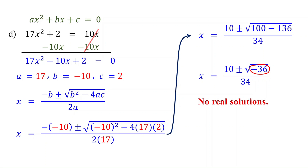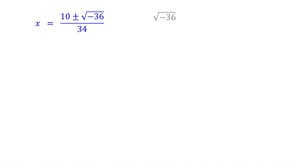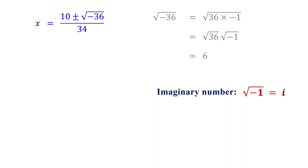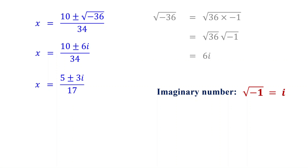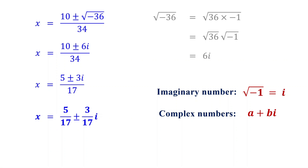However, if you are in Algebra 2, this problem instead has two complex solutions. Negative 36 is the same as 36 times negative 1, which equals the square root of 36 times the square root of negative 1. The square root of 36 is 6. From the definition of imaginary numbers, the square root of negative 1 is denoted by i. So we replace the square root of negative 1 with i, meaning the square root of negative 36 is 6i. Notice that 10, 6, and 34 all have 2 as a common factor, so we simplify by dividing each by 2. Since this is a complex number, rewrite it in standard form a plus bi, giving us 5 over 17 plus or minus 3 over 17 i.